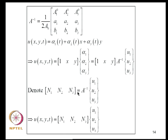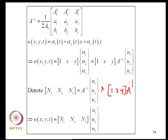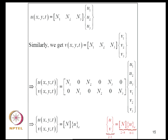Defining N1, N2, N3 from the product of [1, X, Y] and A-inverse, we write U = [N1, N2, N3] * [U1, U2, U3]^T. Similarly for V. Combining U and V into a single vector and writing them in terms of nodal values U1, V1, U2, V2, U3, V3, we write compactly as {U,V} = N * U_E, where U_E is 6×1, N is 2×6. This element has 3 nodes and 6 degrees of freedom: U1, V1, U2, V2, U3, V3.